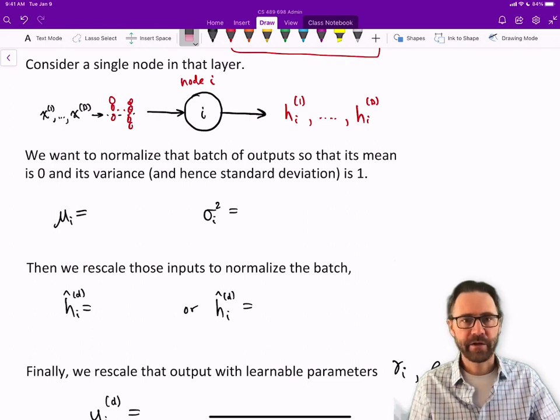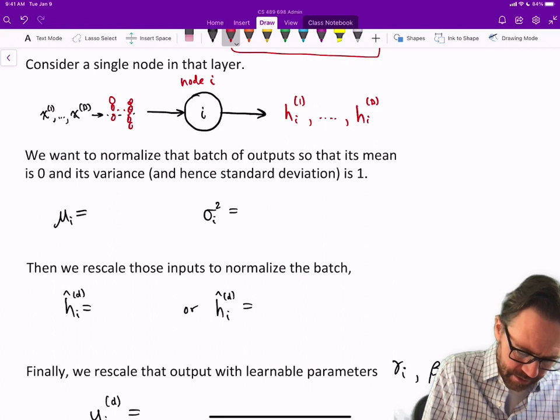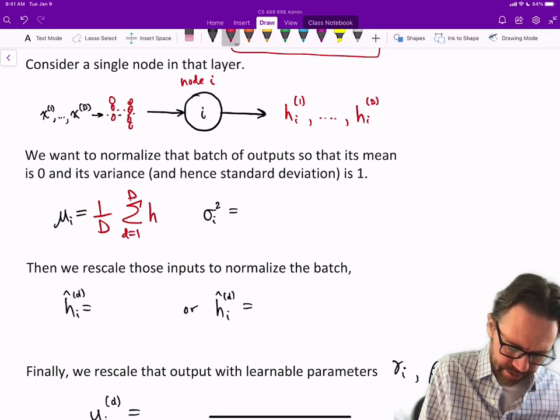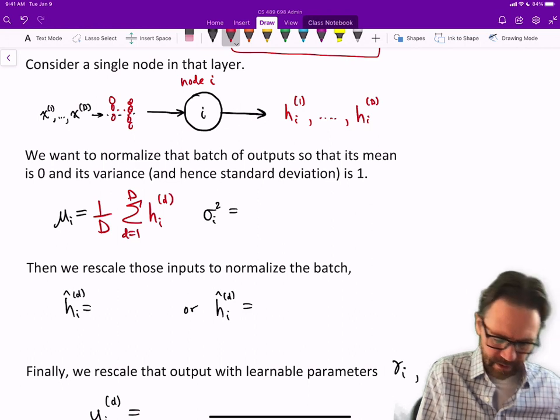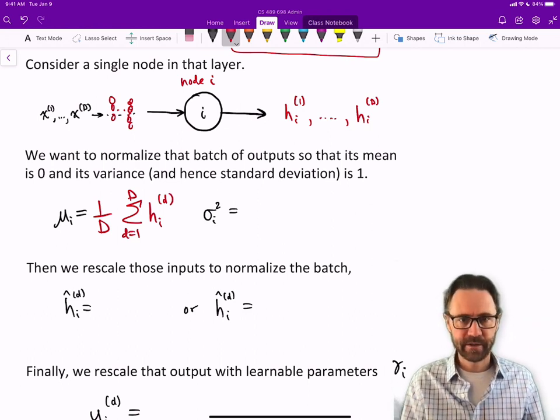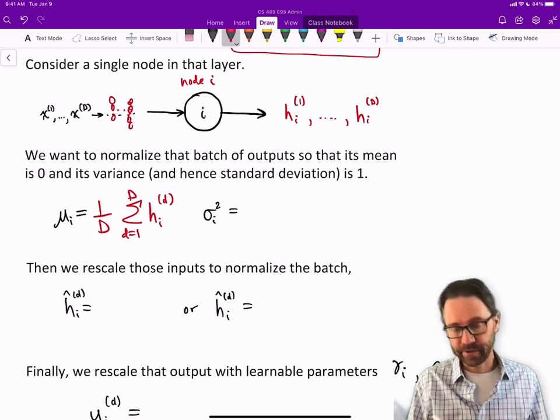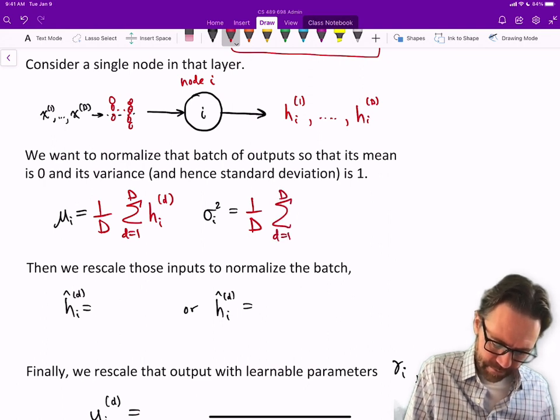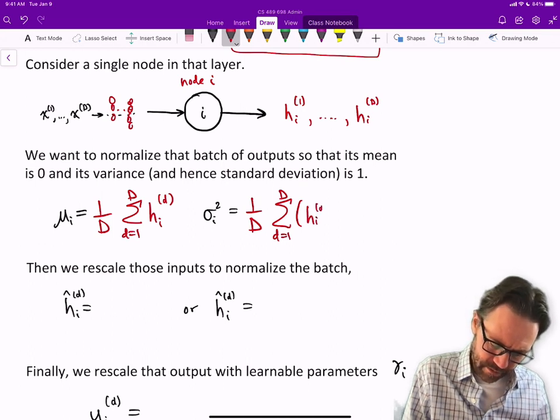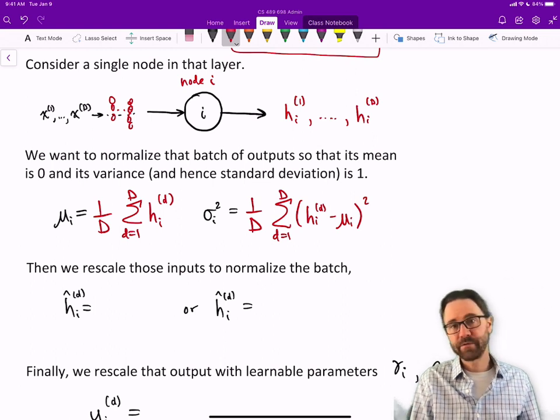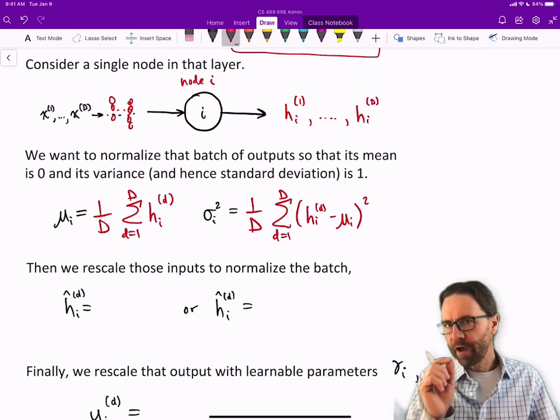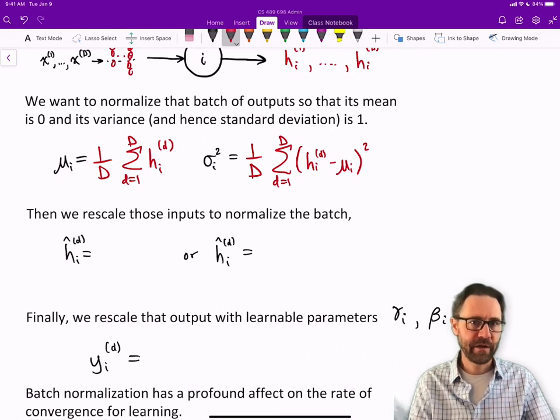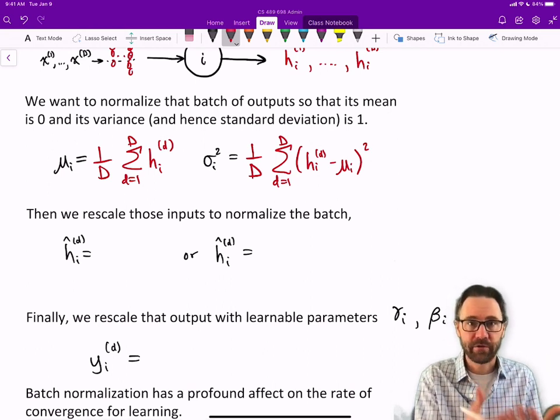The mean you can calculate as 1 over D times the sum from d=1 to D of hi,d. So this is the mean for hidden node i. The variance is basically the square of the difference between the values and that mean: hi,d minus μi squared. Every hidden node will have its own mean and its own variance.